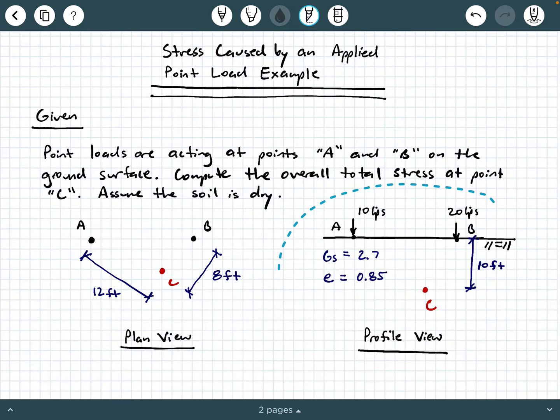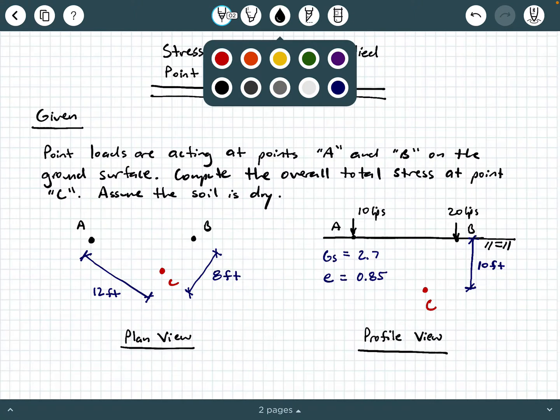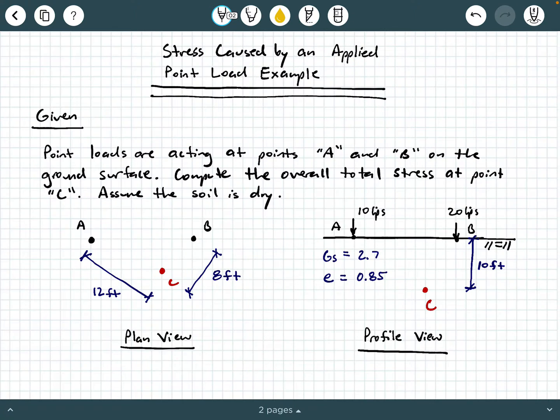So let's take a look at the profile view and help us visualize what's going on better. The profile view shows that point A has the 10 kips acting at it, and point B has 20 kips acting at it. Those are your two loads at point A and B. And then the 8 feet and the 12 feet would be on the ground surface. So for example, the 12 feet would be this distance right here. And then the 8 feet would be this distance right here.